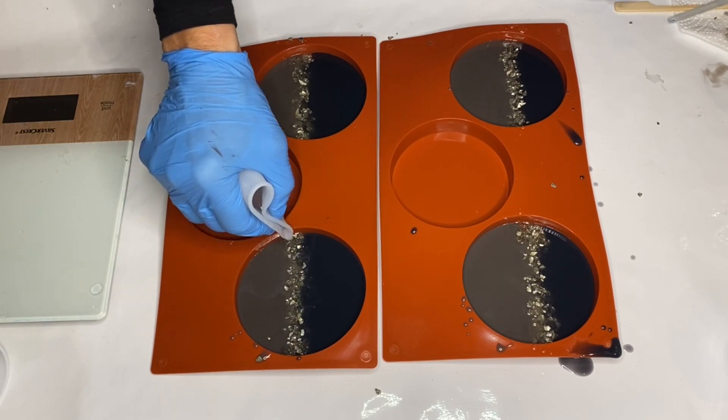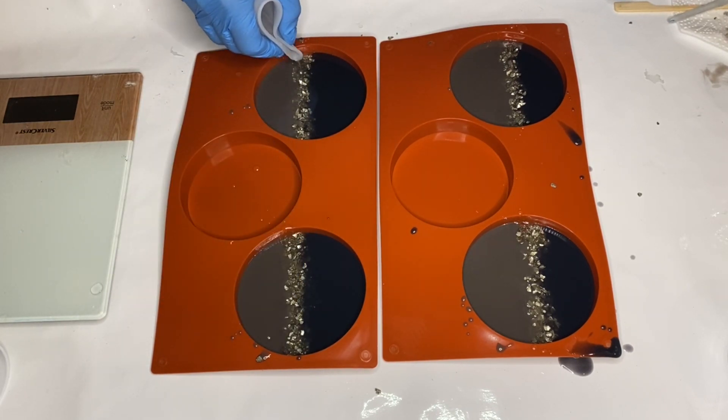Adding some clear resin where the rocks are causes the dark pigments to shift more outwards.